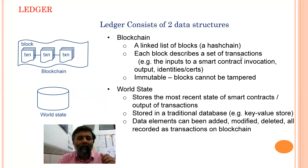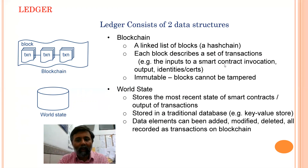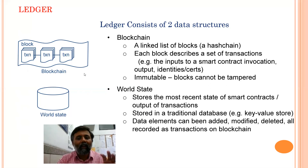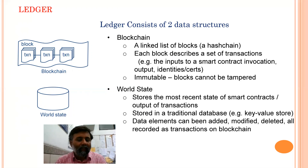Each block describes a set of transactions — in each block we store a set of transactions, and all these blocks are interconnected with hash pointers. These transactions may be input to a smart contract indicating certain types of output or identity. When a smart contract executes, it takes some input and we get some corresponding output, so we have a different data structure in the ledger.